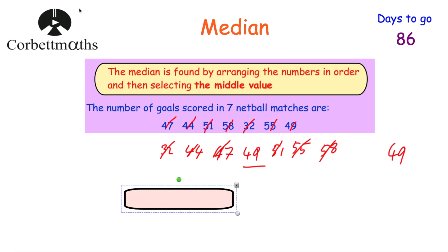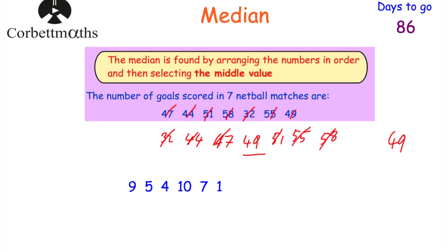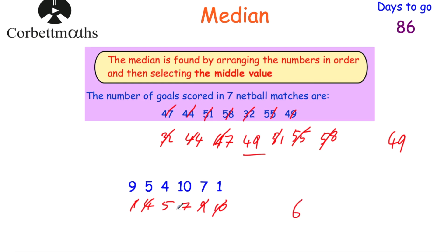Sometimes we might have an even number of values. So if you had an even number of values like this — nine, five, four, 10, seven, and one — we put these in order: one, four, five, seven, nine, ten. To find the median, I would cross off the smallest and the largest, then the next smallest and the next largest. We're left with two numbers in the middle: five and seven. We find the midpoint of those two numbers — in the middle of five and seven is six. So the median here would be six.